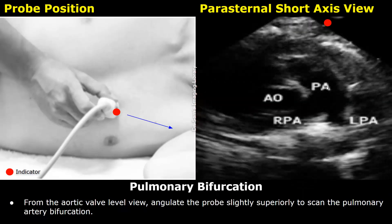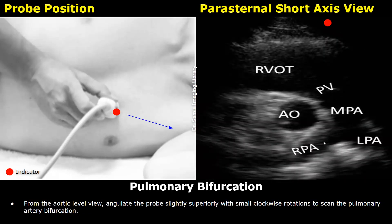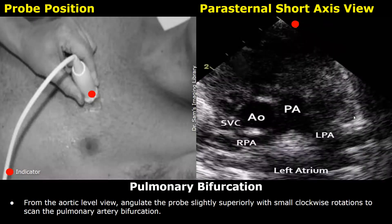From the aortic valve level, slightly angulate the probe superiorly to get the pulmonary bifurcation view. You will see the main pulmonary artery dividing into the left and right pulmonary arteries. The aortic root is seen in the middle in cross-section, surrounded by the right ventricular outflow tract. With slight clockwise rotations and small superior sweeps, you can also see a part of the left atrium and a part of the superior vena cava.